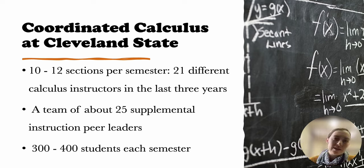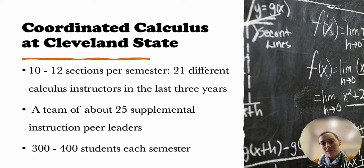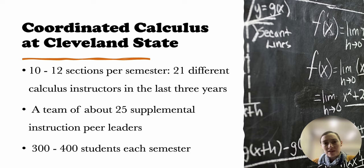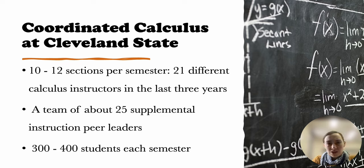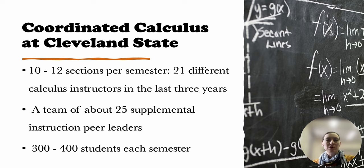At CSU there are 10 to 12 sections of Calculus 1 and 2 which run concurrently each semester. These sections are tightly coordinated and we use a common syllabus, common homework system, and exams which are written by me. The faculty teaching these sections vary every semester and can include tenured and tenure-track faculty, lecturers, adjunct faculty, as well as the occasional visiting professor. Over the last three years I've worked with 21 different calculus instructors. Our calculus courses also have embedded supplemental instruction sessions where students meet three times a week with STEM peer teachers who are undergraduates who have done well in the course previously. Each course section is assigned two to three peer teachers and enrolls 30 to 40 students. In total, between 300 and 400 students enroll in either Calculus 1 or 2 each semester at CSU.